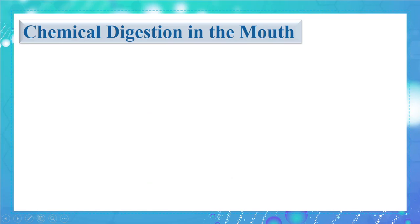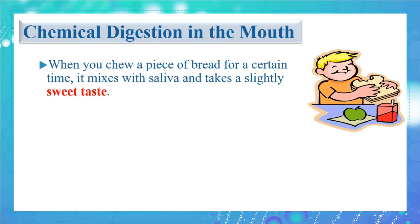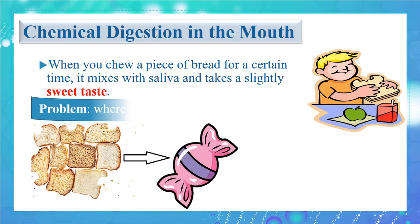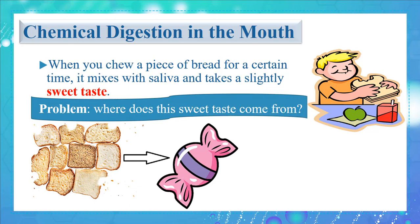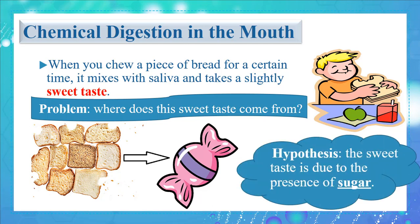We will start with chemical digestion in the mouth. When you chew a piece of bread for a certain time, it mixes with saliva and takes a slightly sweet taste. Where does this sweet taste come from? Things usually taste sweet because they contain sugar. So our hypothesis would be: the sweet taste is due to the presence of sugar.